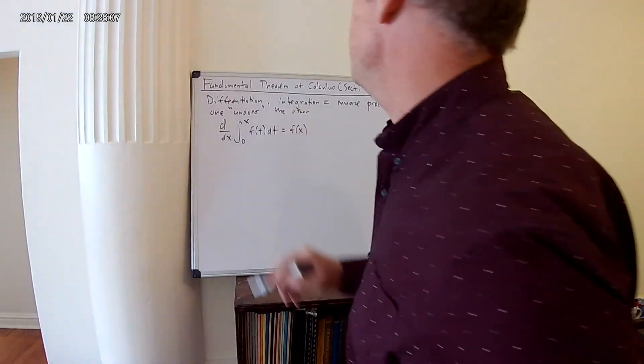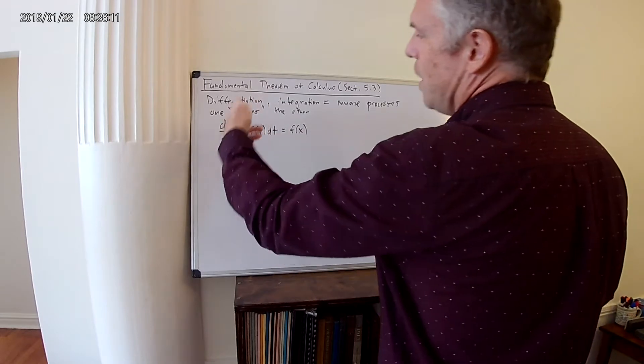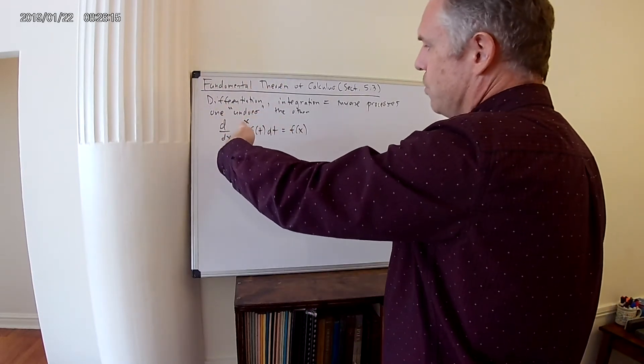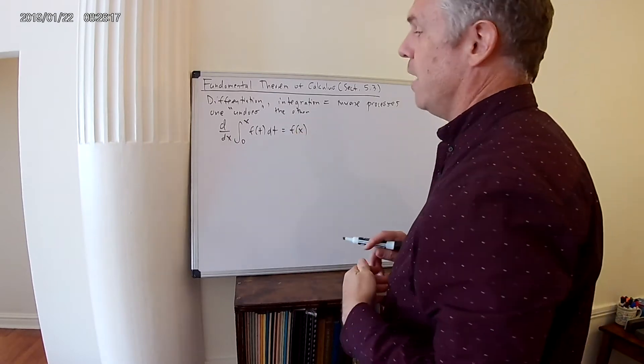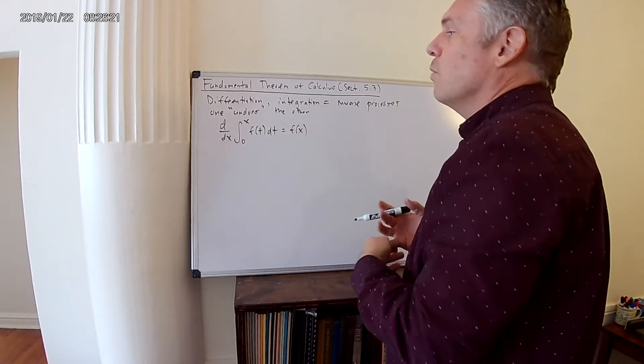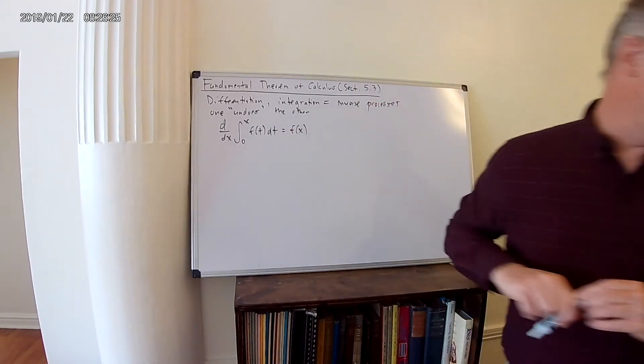Don't get too concerned about the x's and the t's here. What this is saying is if you take a derivative of an integral, the derivative undoes the integration and just spits back out your f(x). In other words, if you dug a hole and then you filled it back in with dirt, one operation would undo the other. So differentiation undoes integration.